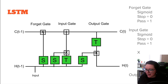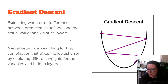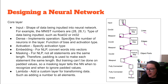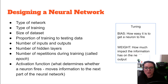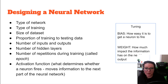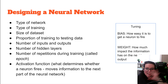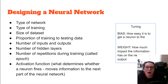We'll come back to what LSTM means in a moment. First, let's talk about the decisions you make when designing your neural network. We need to set the type of network — here we're doing an RNN. We need to decide what we're going to train it on, the size of our dataset, and how we're going to split the testing and training data. For forecasting models, the testing data is typically the more recent data, while we build the model on more historical information.